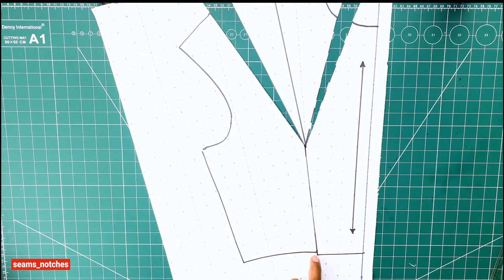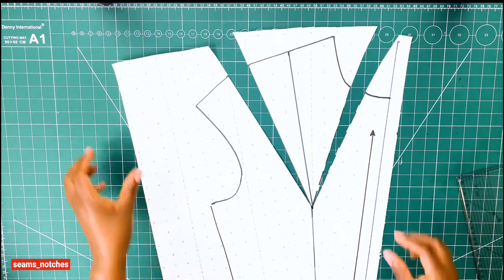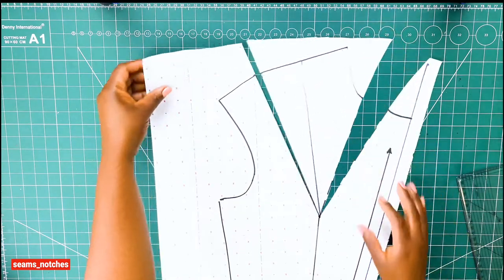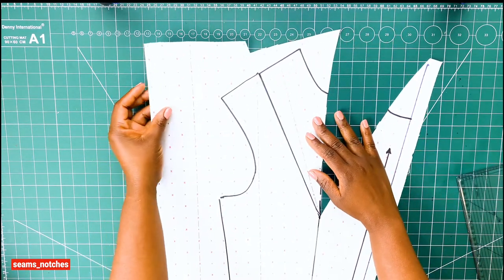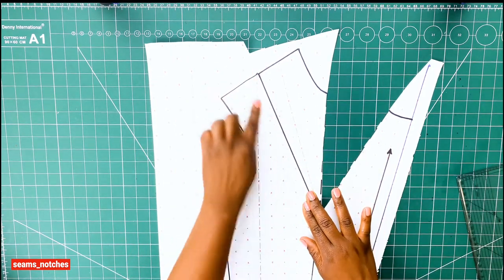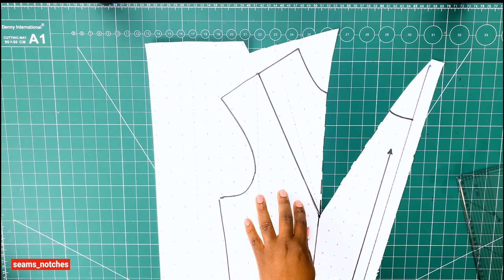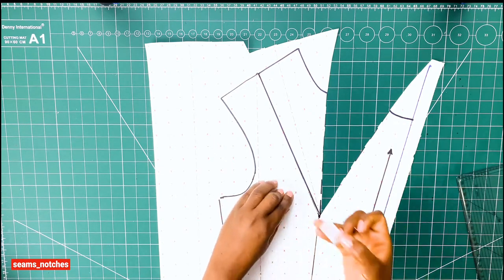While closing the waist dart, I have noticed a little bump on the waistline, so what I need to do is even out that line by using my pattern master. Like we did before, I will gently close the shoulder dart using my sellotape to secure the closure, making sure it's well in place.